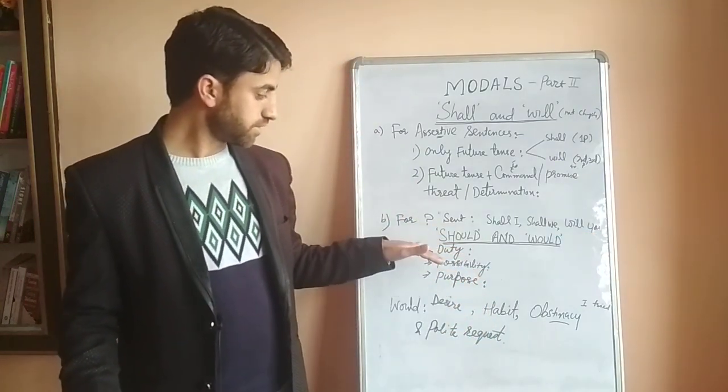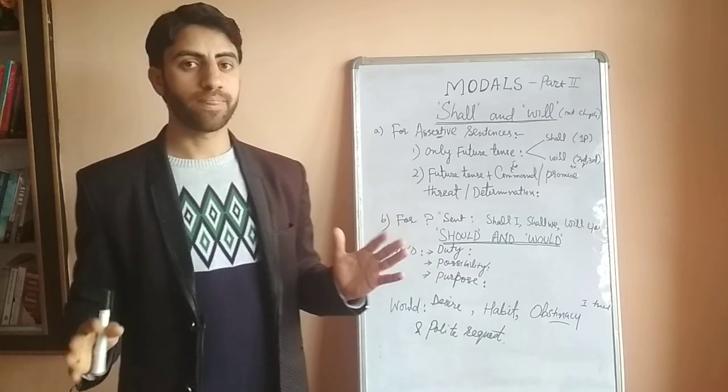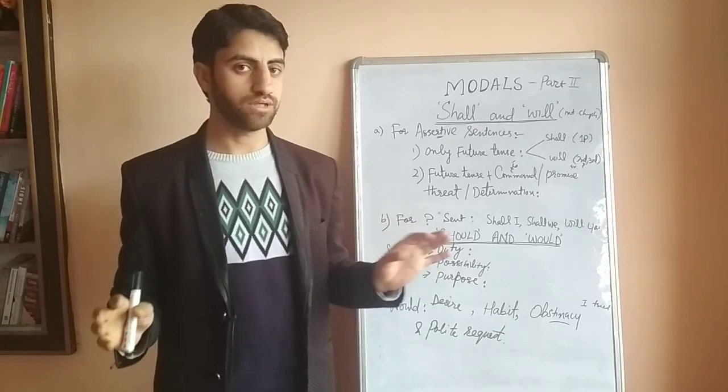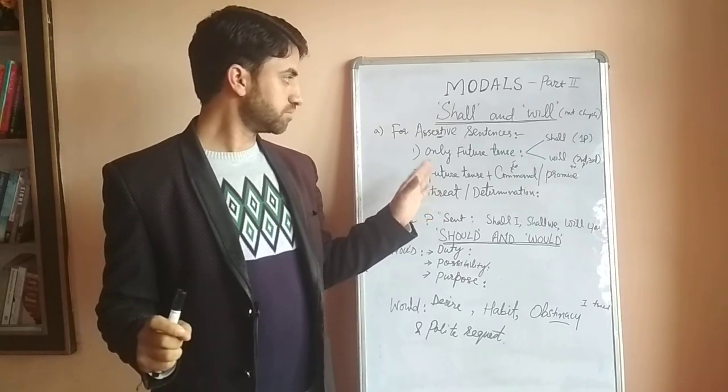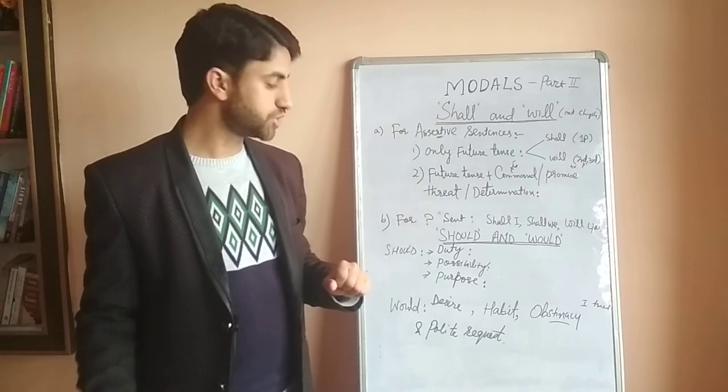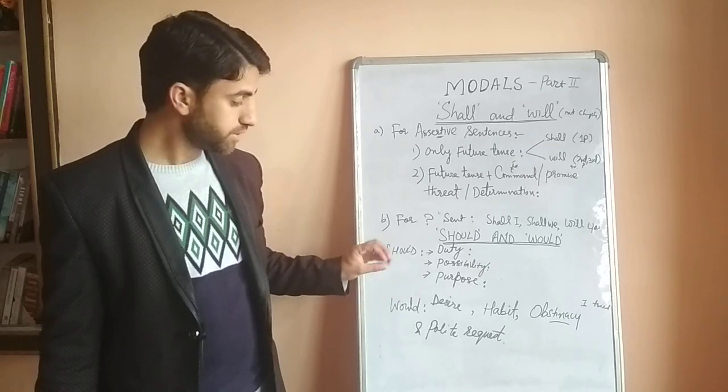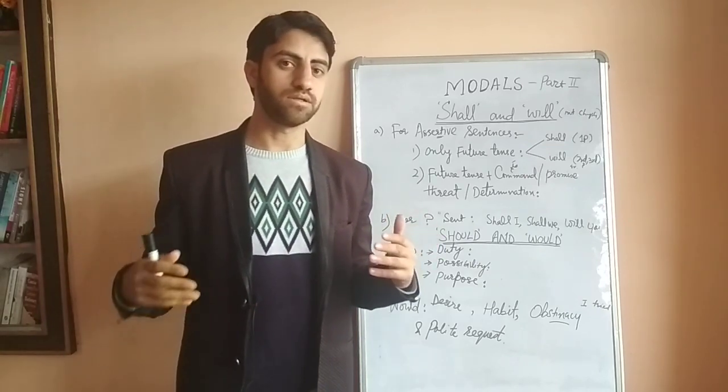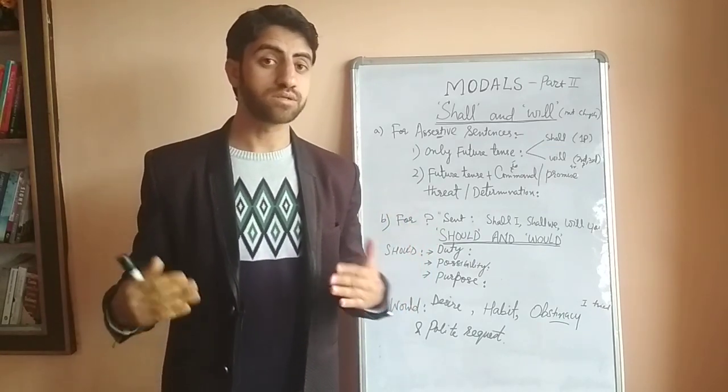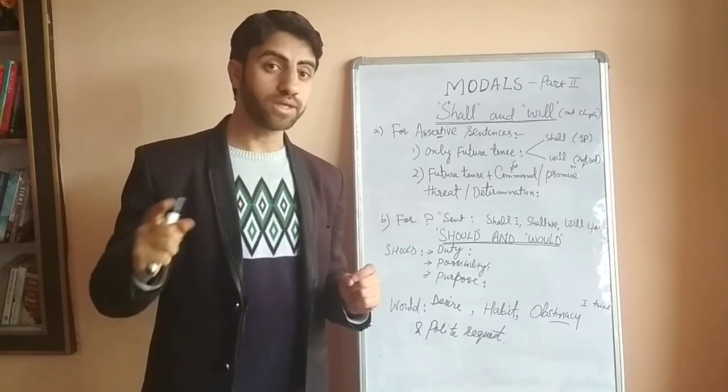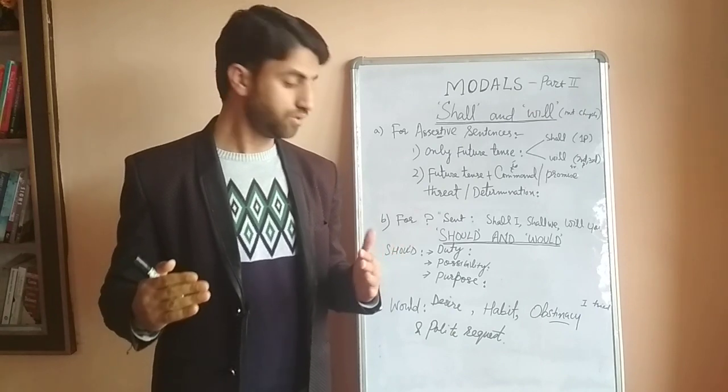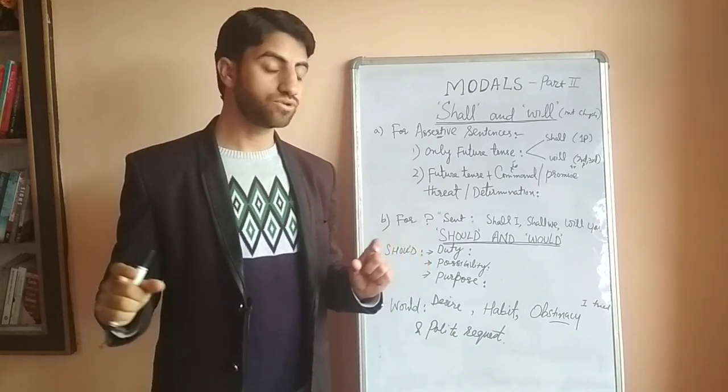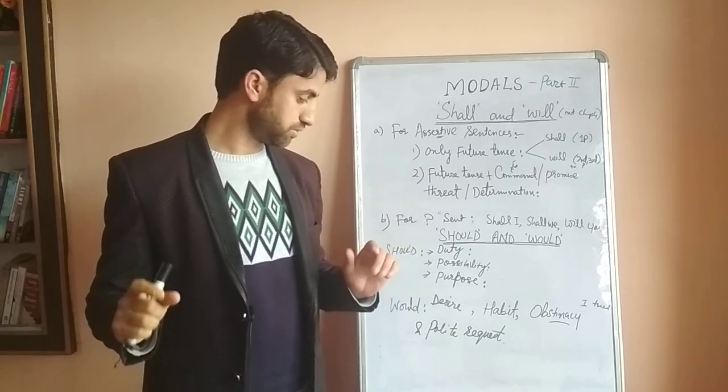Next we are going to talk about should and would. They are the past tense or the past form of shall and will. Should is used to suggest, it tells us about some duty or some moral obligation. It need not to be confused with orto. Orto ke saath hum use kate hai to infinitu, but should goes without infinitu.